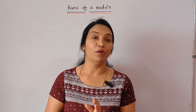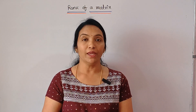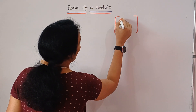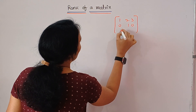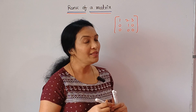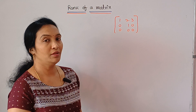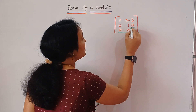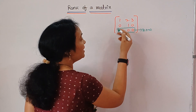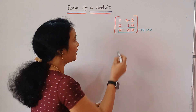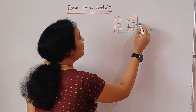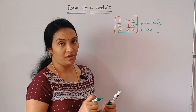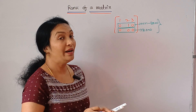One is the zero row and what is the non-zero row. Consider the matrix [1, 2, 3; 0, 1, 0; 0, 0, 0]. If every element of that row is zero, that is a zero row. If any one element in that row is non-zero, that is a non-zero row. You need to remember these two points first.